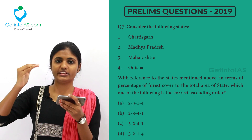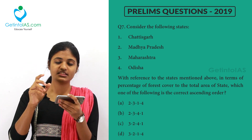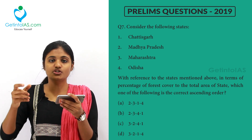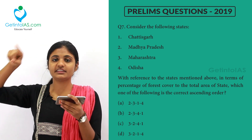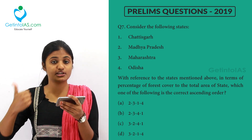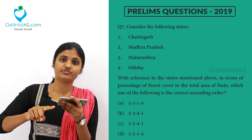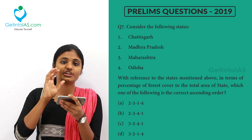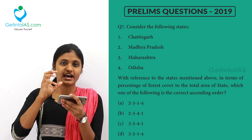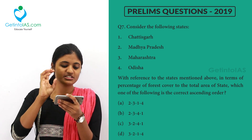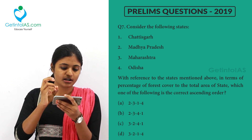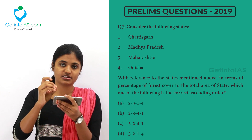You have to take total area and forest cover both into account. Starting from small to big — Maharashtra has less forest cover, so first comes Maharashtra, second comes Madhya Pradesh, third comes Odisha, and last comes Chhattisgarh.